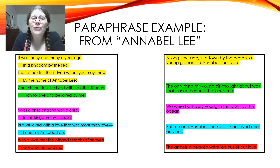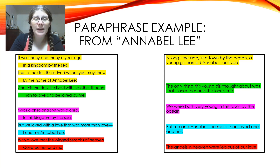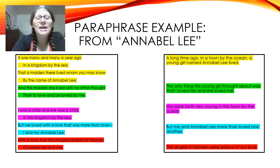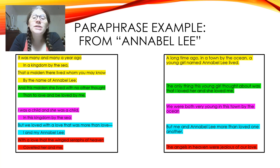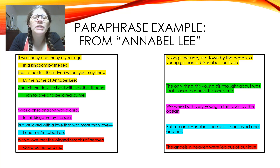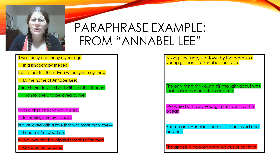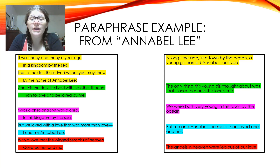Here is my example from Annabelle Lee. The first part of the first stanza reads: 'It was many and many a year ago, in a kingdom by the sea, that a maiden there lived whom you may know by the name of Annabelle Lee.' I started at the beginning and stopped at the semicolon after 'Annabelle Lee.' My paraphrase is: 'A long time ago, in a town by the ocean, a young girl named Annabelle Lee lived.' 'Many and many a year ago' means a long time ago; 'a kingdom by the sea' becomes 'a town by the ocean.' You can also include 'whom you may know' — so: 'A young girl you might know by Annabelle Lee lived in this town by the ocean a long time ago.' You can reverse the sentence as well.